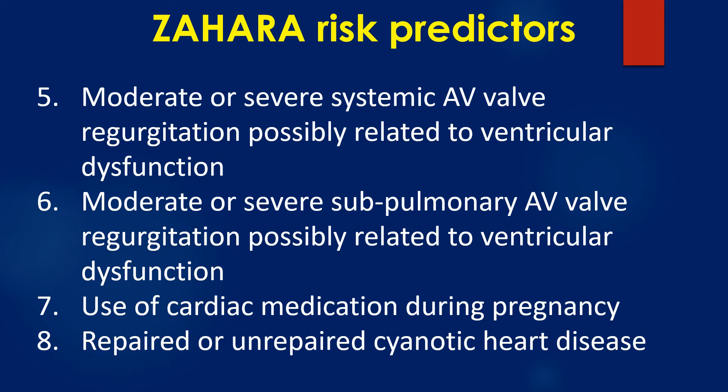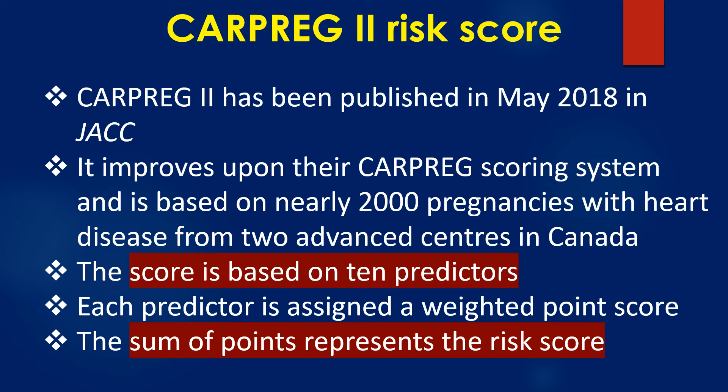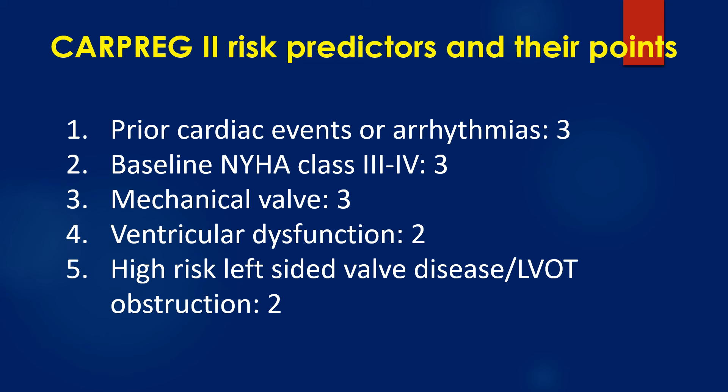CARPREG 2 was published in May 2018 in the Journal of the American College of Cardiology. It improves upon the original CARPREG scoring system and is based on nearly 2000 pregnancies with heart disease from two advanced centres in Canada. The score is based on 10 predictors, each assigned a weighted point score, and the sum of points represents the total score.